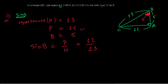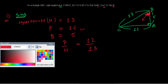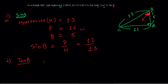Now let's find tan B. I am not finding cos C yet because that uses reference angle C — we are still on reference angle B. For tan B, the perpendicular and base are the same as before. Tan B equals P over B, so that is 12 over 5.